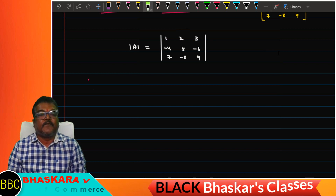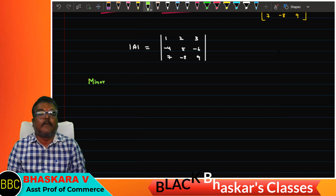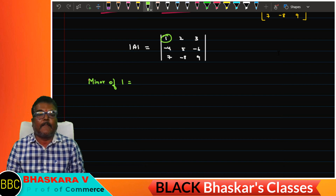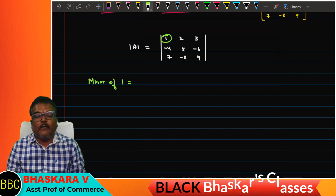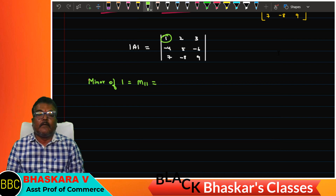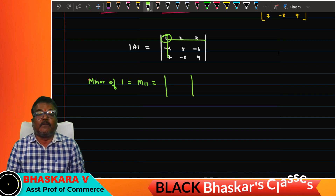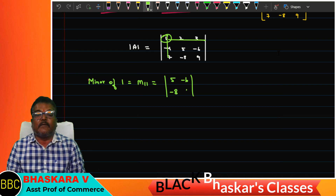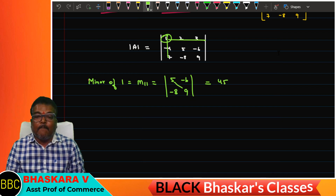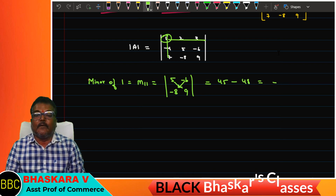Minor of minus one equals minus one. Minor of one equals... Minor of three equals two. Minor of six equals. Minor of nine equals — five hundred plus minus one equals five zero times. Minor of seven. Minor of nine equals three points. Minor of six. Minor of seven and nine — minor of nine equals 48, equals minus 3.